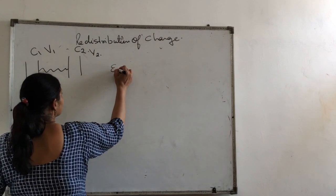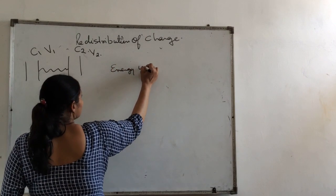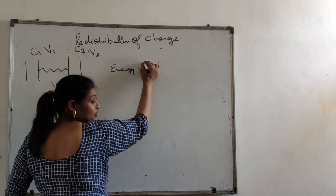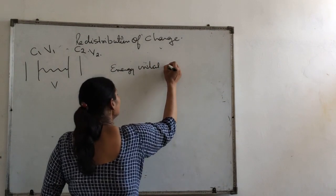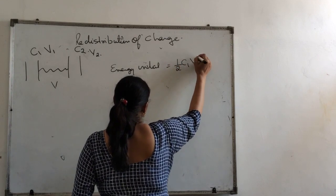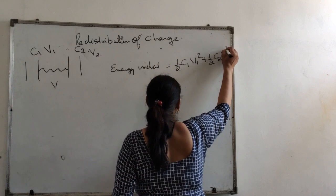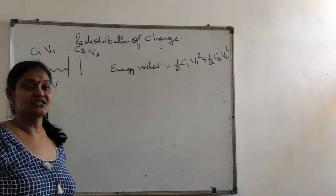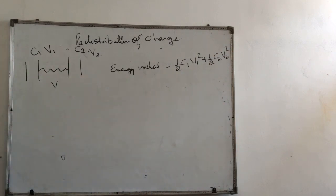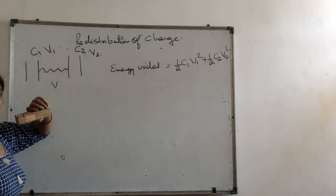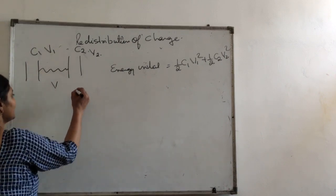In that case, initial energy will be half C1 V1 square plus half C2 V2 square. Here you have redistribution of charge, so charge flows from one to another.